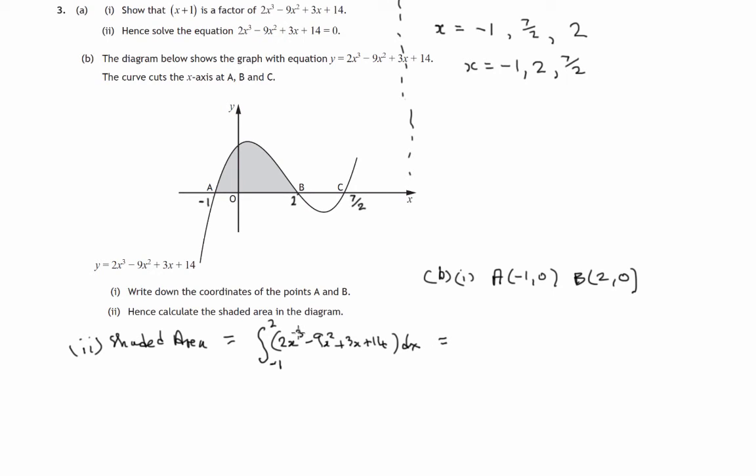2x cubed, remember to integrate, we increase and divide the index. So we'll have 2x to the 4 over 4. Minus 9x squared goes up to x cubed and we divide by the new index. 3x to the 1 goes up to x to the 2 and we divide by the new index. x to the 0, that's 1, goes up to 1 and we divide by 1. So 14 integrates to 14x.